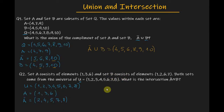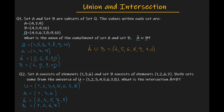We have set B with the elements 1, 2, 6 and 7. We are looking for the intersection between the complement of set A and set B, so we need to find which elements are common to both sets. Both sets contain the element 2 and both sets contain the element 7. So, the complement of set A intersection with set B equals {2, 7}.